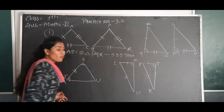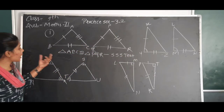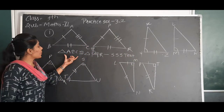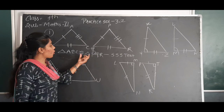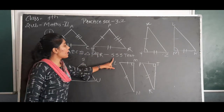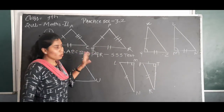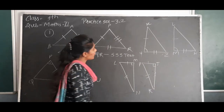So write here: triangle ABC is congruent to triangle PQR by SSS.